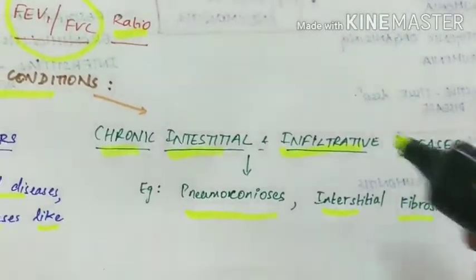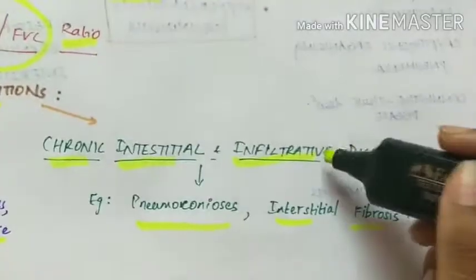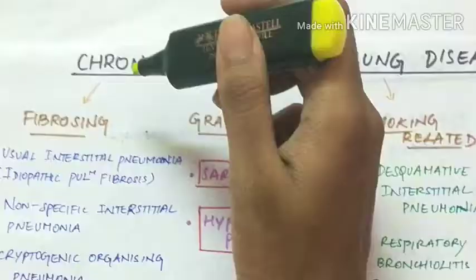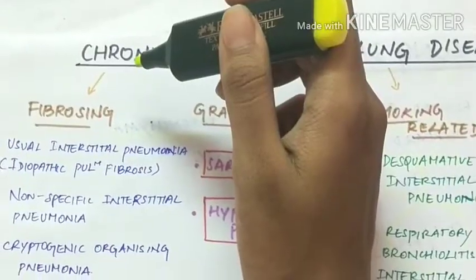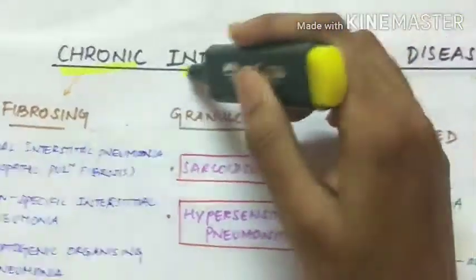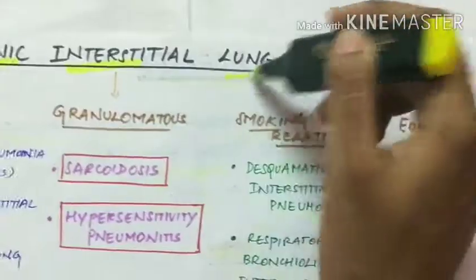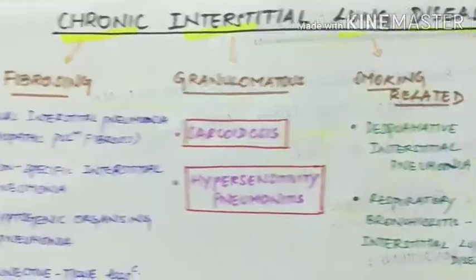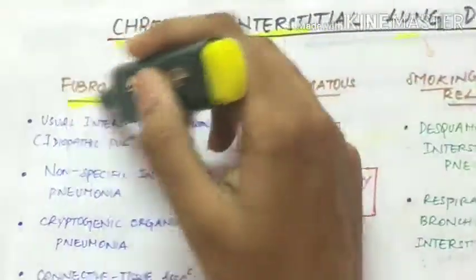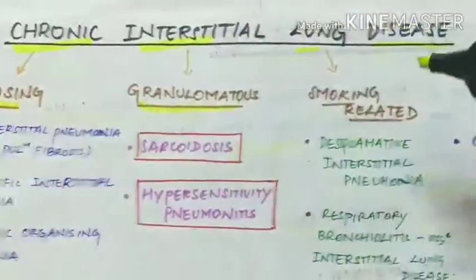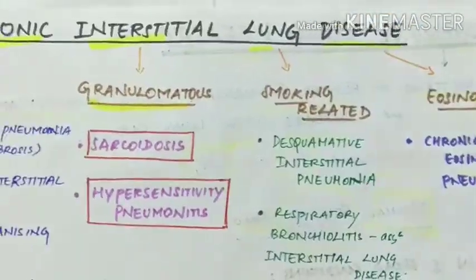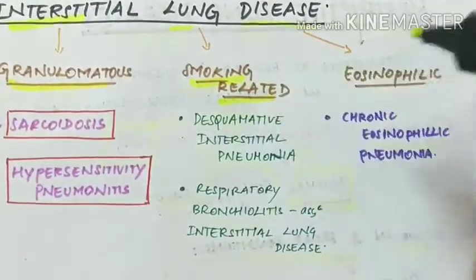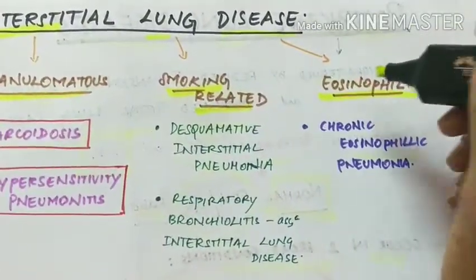We will be seeing about the chronic interstitial and infiltrative diseases in detail. Chronic interstitial lung diseases are of four categories: fibrosing, granulomatous, smoking-related, and eosinophilic.